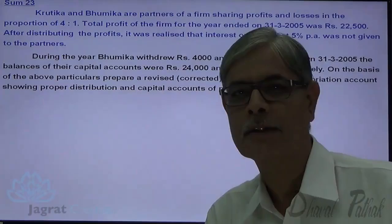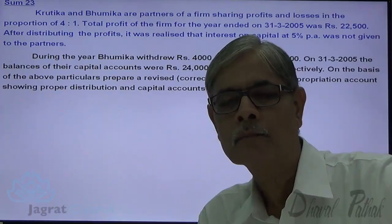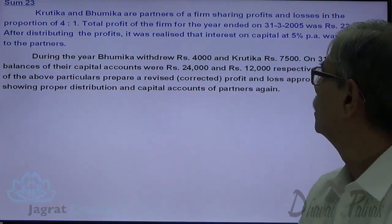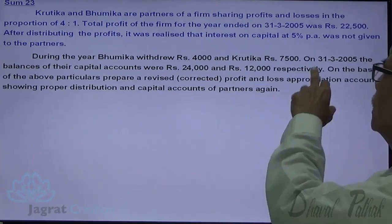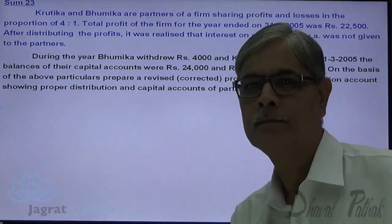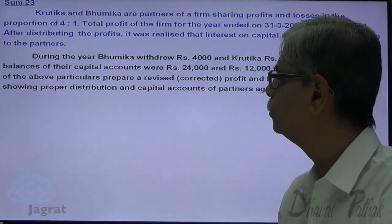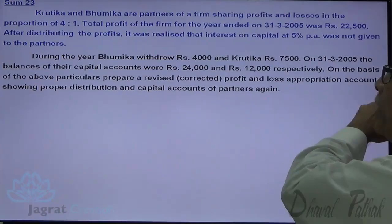After distributing the profits, it was realized that interest on capital at a rate of 5% per annum was not given to the partners. During the year, Bhumika drew ₹4,000 and Krutika ₹7,500. On 31st March 2005, the balance of their capital accounts were ₹24,000 and ₹12,000 respectively.